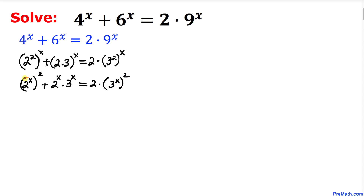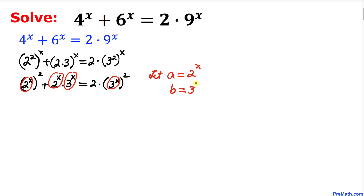Now, let's focus on the 2^x terms and the 3^x terms. I'll call a = 2^x and substitute that. I'll also let b = 3^x. After substitution, our equation becomes a^2 + a·b = 2b^2.